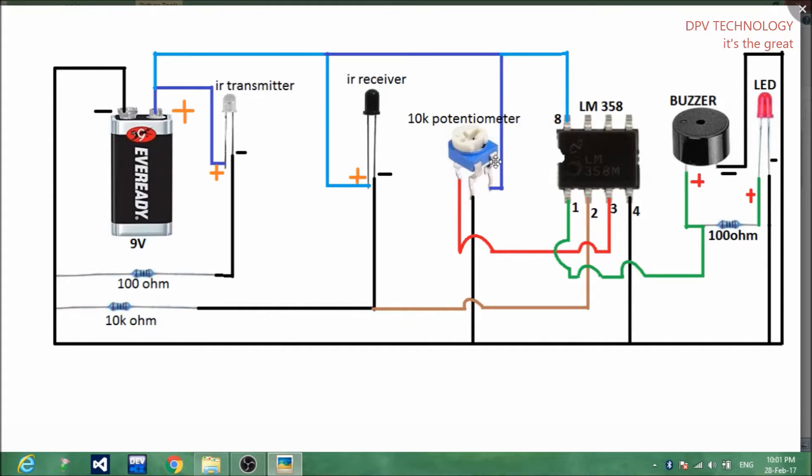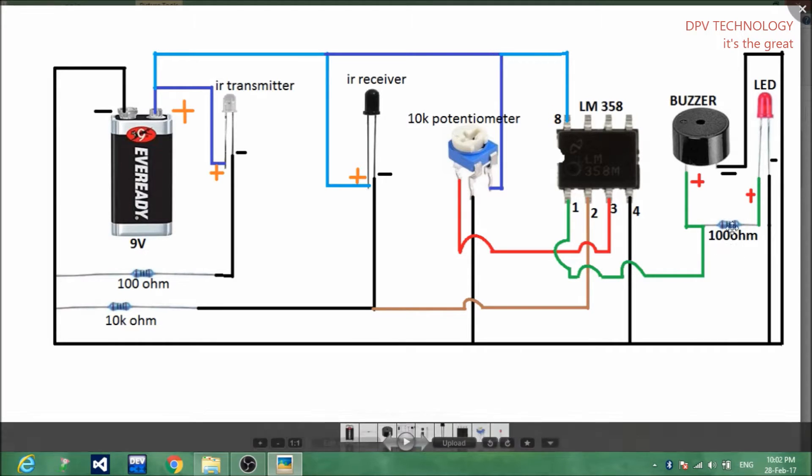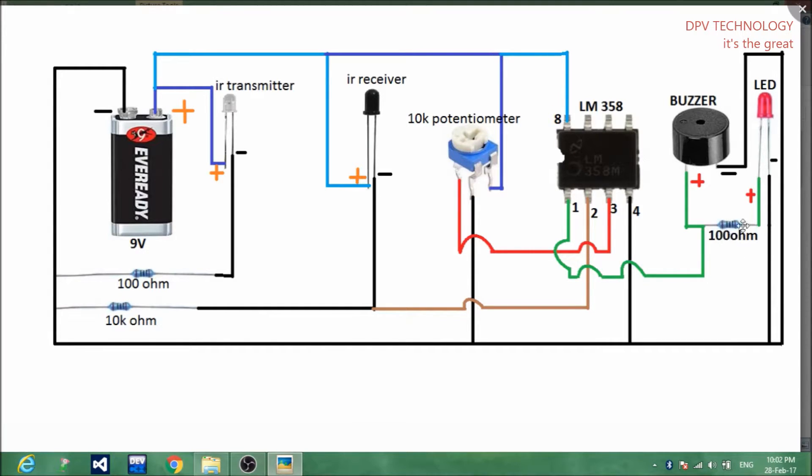Then you need an LM358 IC, one buzzer, one LED, and resistors: 200 ohm resistors here, one and one, and a 10k ohm resistor. You have to keep the transmitter and receiver always in front of each other.